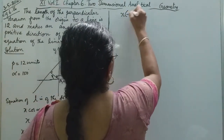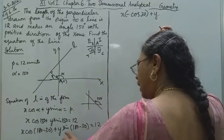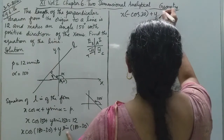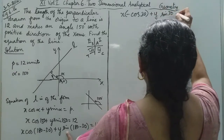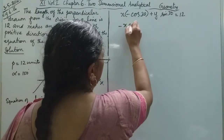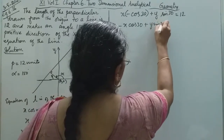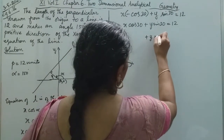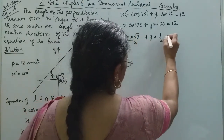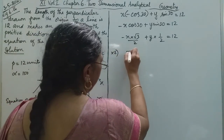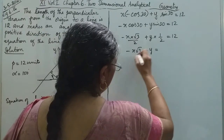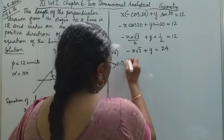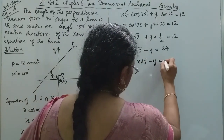So we can write: minus x·cos 30 + y·sin 30 = 12. Now, cos 30 = √3/2 and sin 30 = 1/2. Substituting and multiplying through by 2: minus x·√3 + y = 24. We can write this as minus x√3 + y = 24.